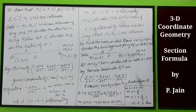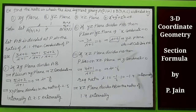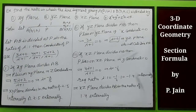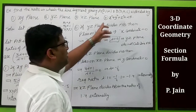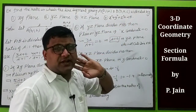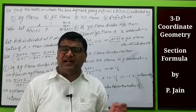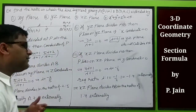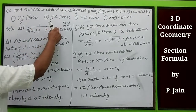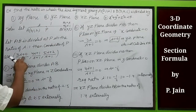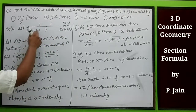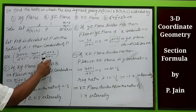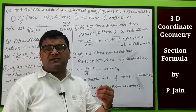Another very good example: find the ratio in which the line segment joining A(0,1,2) and B(3,4,5) is divided by the xy-plane, yz-plane, xz-plane, and the sphere x²+y²+z²=25. Let AB be divided at point P in the ratio λ is to 1. Coordinates of P are: (3λ/(λ+1), (4λ+1)/(λ+1), (5λ+2)/(λ+1)).